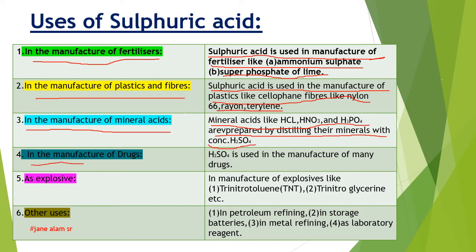Number 4: In the manufacture of drugs. H₂SO₄ is used in the manufacture of many drugs. Number 5: In the manufacture of explosives like trinitrotoluene (TNT), trinitroglycerine, etc.